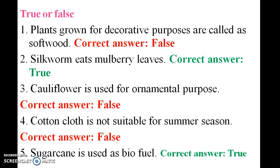True or False: Plants grown for decorative purposes are called softwood. This is false — they are called ornamental plants. Silk palm yields mulberry leaves — this is correct. Cauliflower is used for ornamental purposes — this is false, cauliflower is an edible plant.